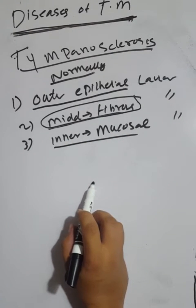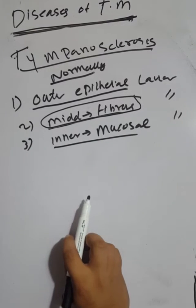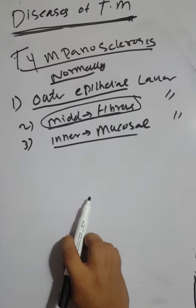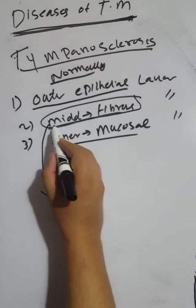In cases of chronic otitis externa, the middle fibrous layer becomes thin and atrophic, causing tympanosclerosis. Tympanosclerosis is the hyalination and later calcification of the fibrous layer of the tympanic membrane.